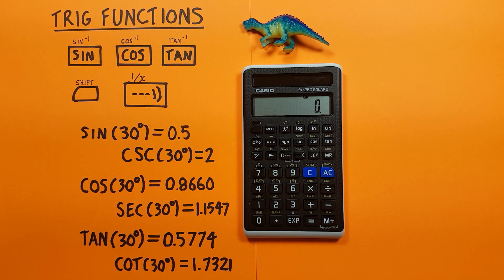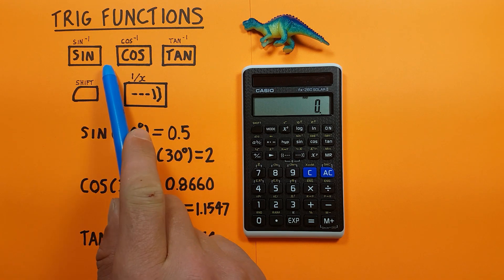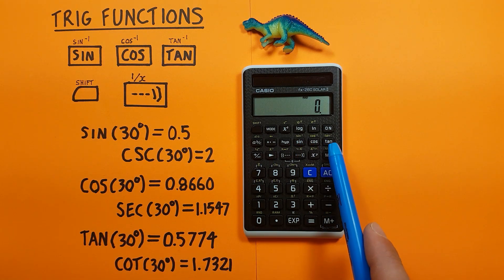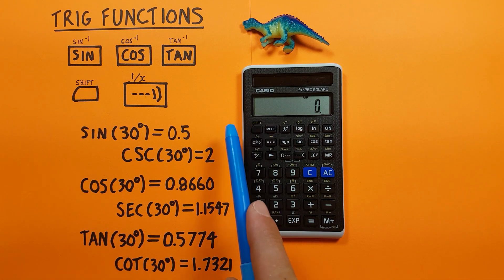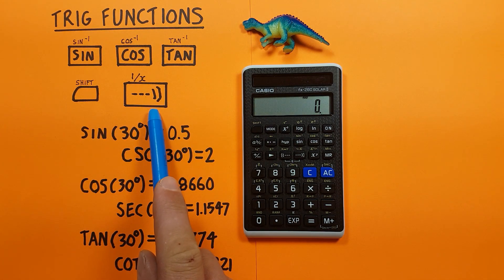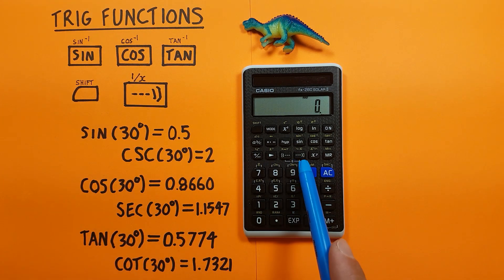To do this we'll be using the sine, cosine, and tangent keys, which look like this and are located here, as well as the shift key in the top left corner here, and the right bracket with the shift function of x inverse, which looks like this and is located here.